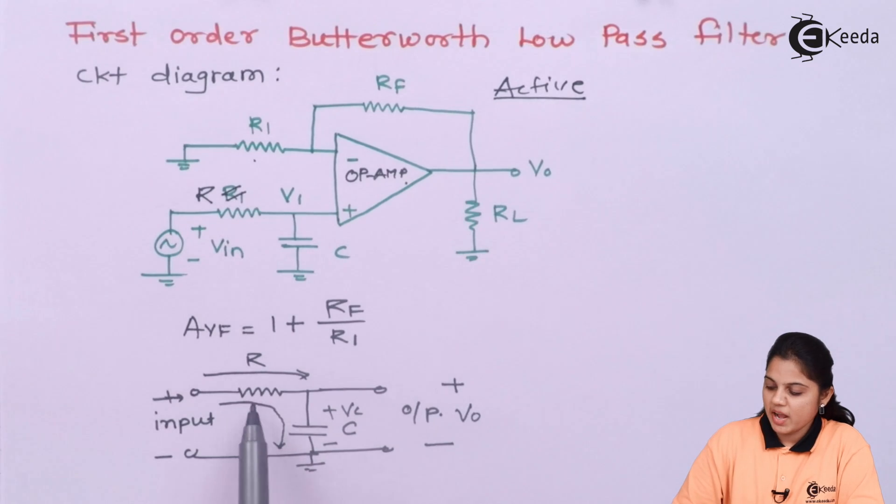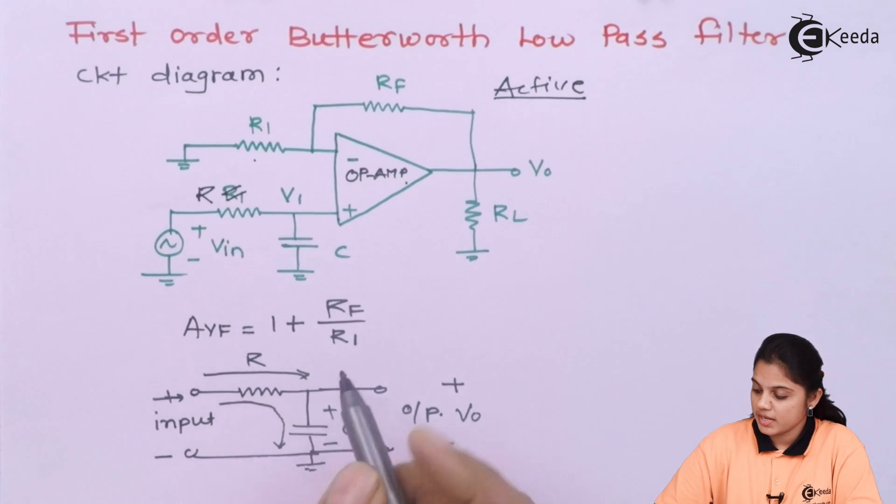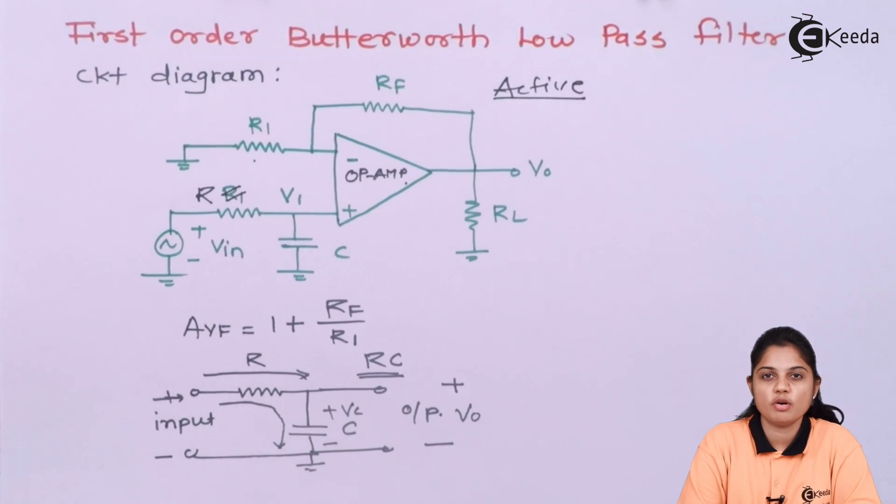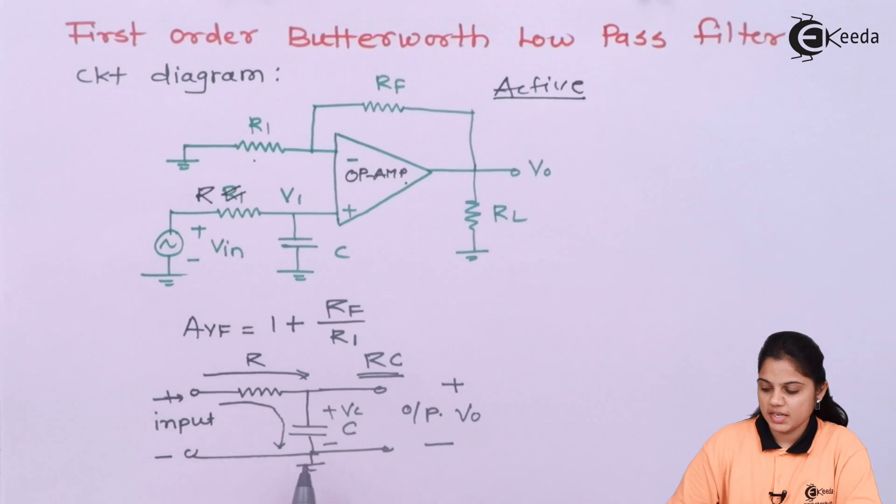So basically, this resistive and capacitive network, this can be called as RC network. And this RC network stands for low pass filtering. That means, for low frequency, this circuit will give you the output voltage.